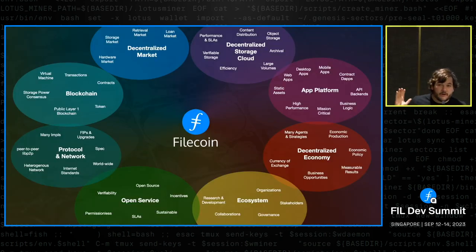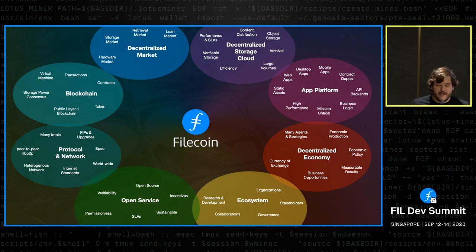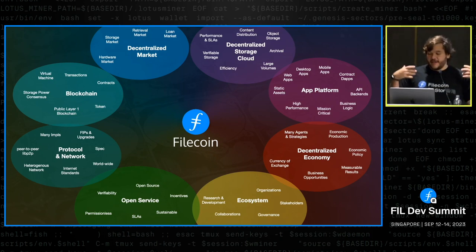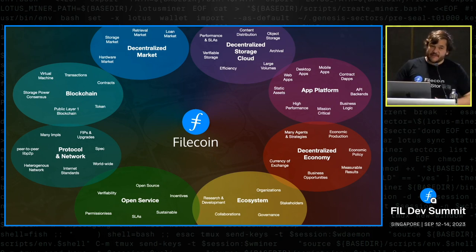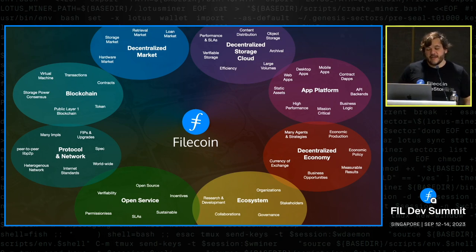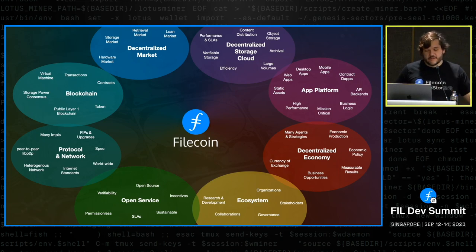The Filecoin protocol is a very large system. It has all kinds of components in it — a blockchain, a decentralized market, it's building a decentralized storage cloud, an app platform, a decentralized economy, a broader ecosystem. All of that gets pulled together into a large-scale open service, mediated through protocols and networks.